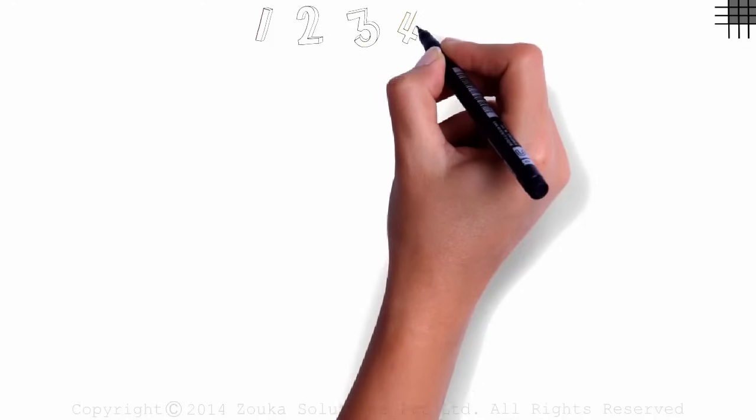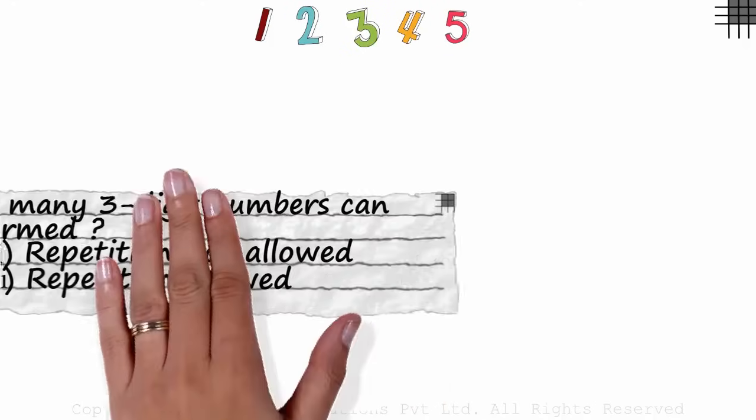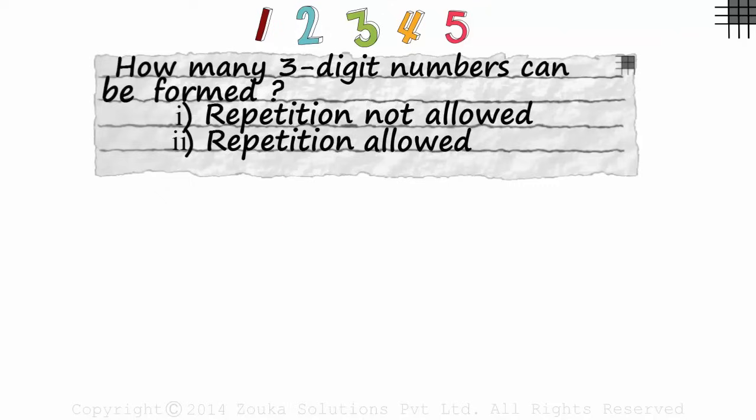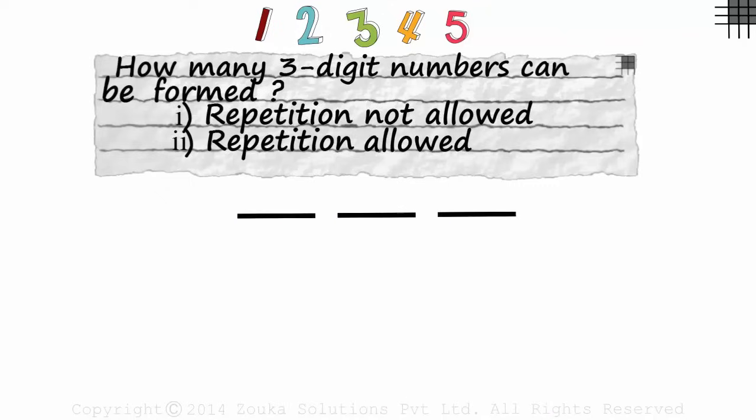Let's say we have these five digits with us. And this is what we are asked. Read the question well. How many three-digit numbers can be formed? Let's form three slots here for the three digits. How many three-digit numbers can be formed using these five digits? And with this question, we have been given two conditions. First, it asks us the answer when repetition is not allowed.